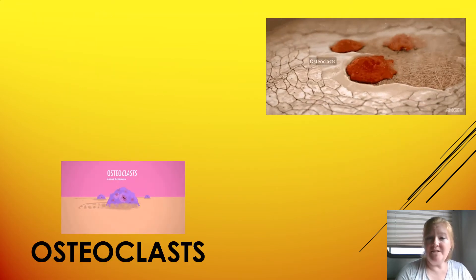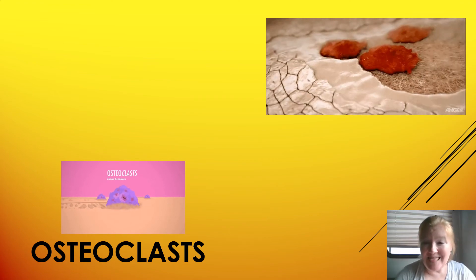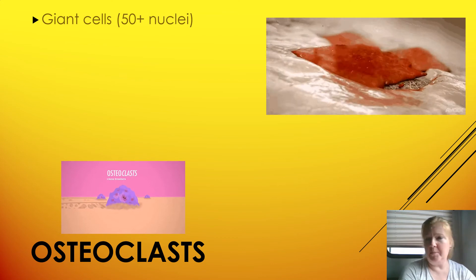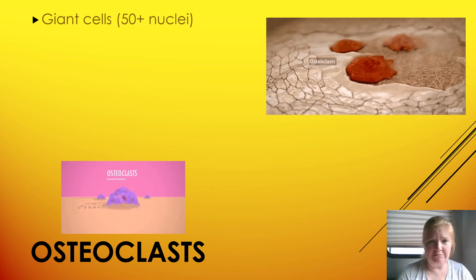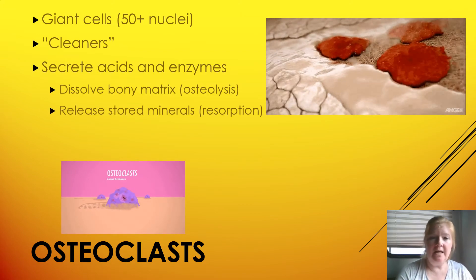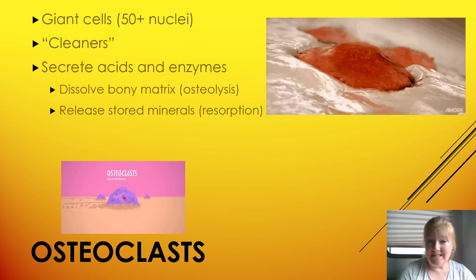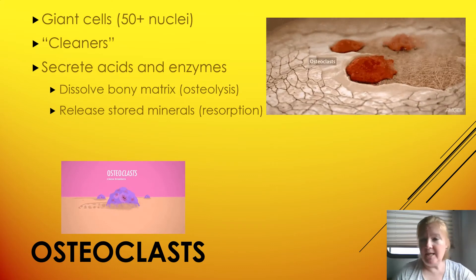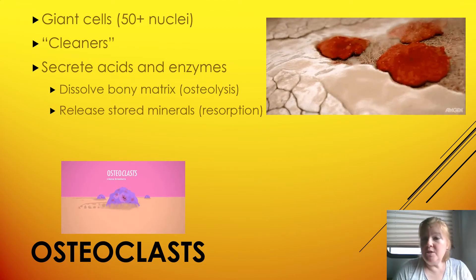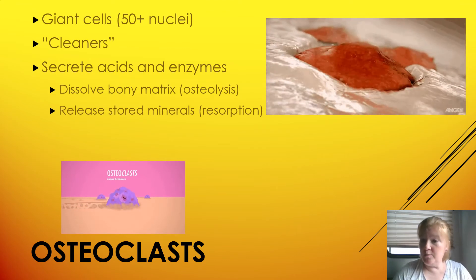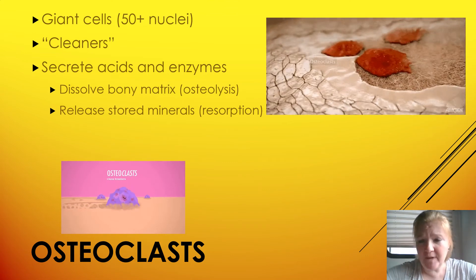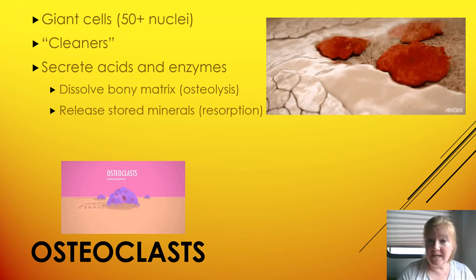Now we have osteoclasts — think 'clast, clean.' Osteoclasts are gigantic cleaners. They secrete acids and enzymes, so they dissolve the bony matrix — that's called osteolysis. And in the process they will release stored minerals, which is called resorption. So if you're running low on calcium, the osteoclasts will break down some of your bone and release the calcium.